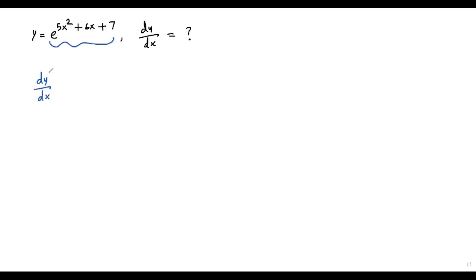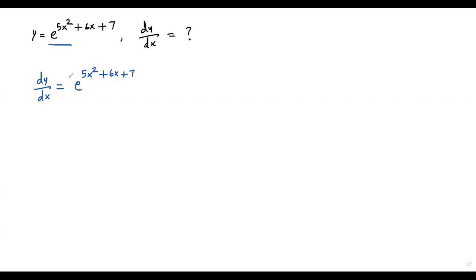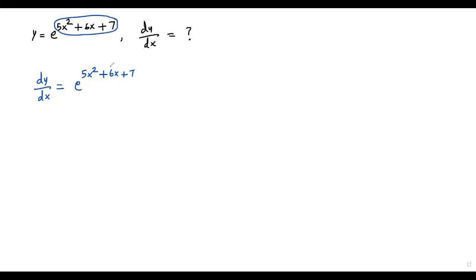On the right side we have an exponential term. Whenever I want to find the derivative of an exponential term like e to the power something, its derivative requires us to write the exponential as it is — that is e to the power 5x squared plus 6x plus 7 — and then by the chain rule, we also take the derivative of the exponent.